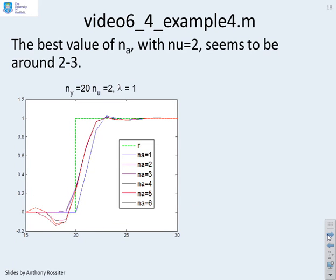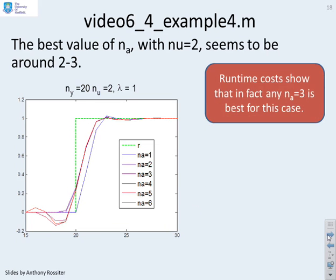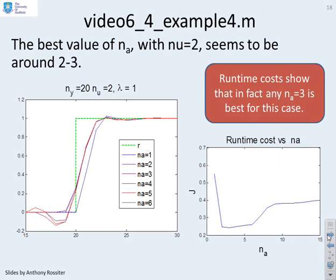Example 4. Another new example. And this one, you'll see that the runtime costs show that the best value is in fact here at 3. Though you could argue you've got pretty much the same performance if you choose NA equals 2. And that's these curves in here. Clearly, if you make NA bigger, you get all these characteristics here that you don't particularly want.